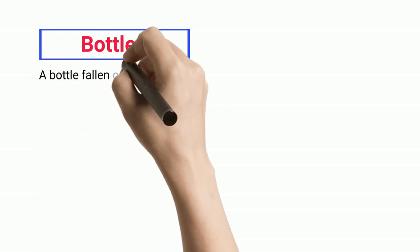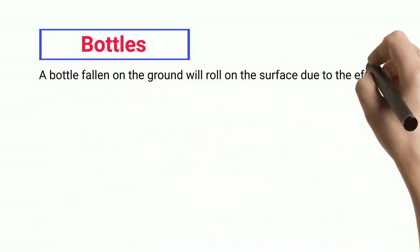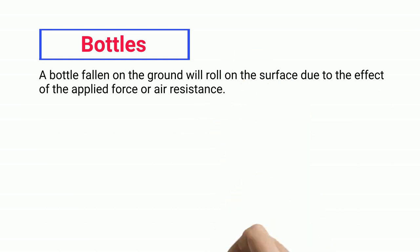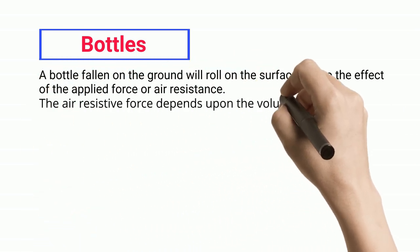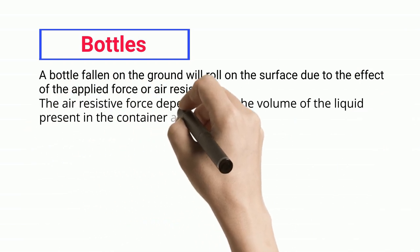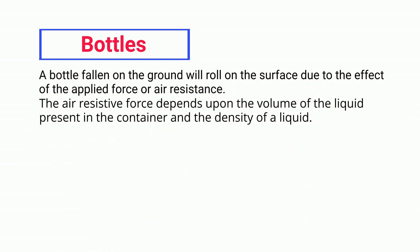Bottles. A bottle fallen on the ground will roll on the surface due to the effect of the applied force or air resistance. The air resistive force depends upon the volume of the liquid present in the container and the density of the liquid.